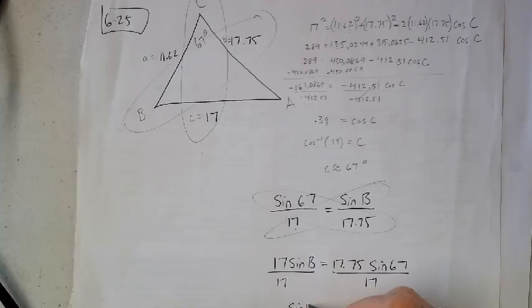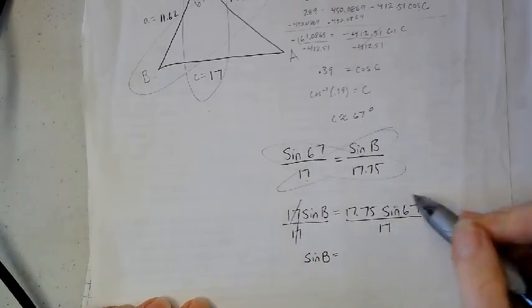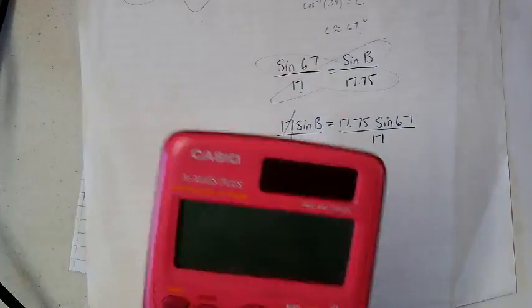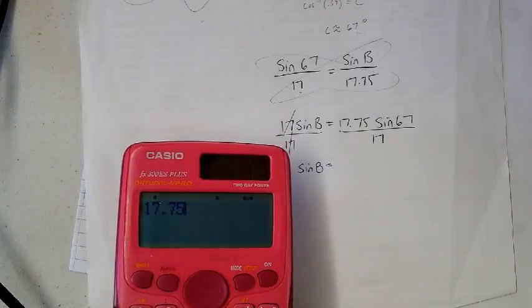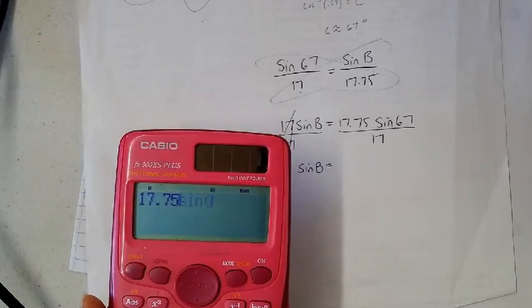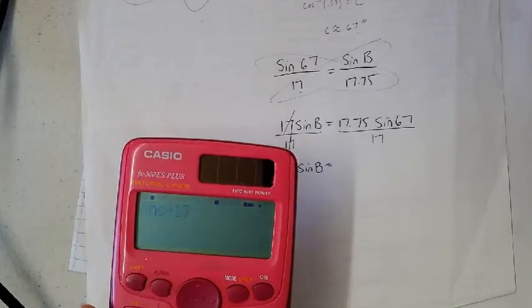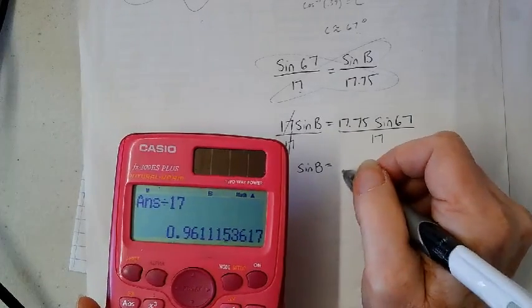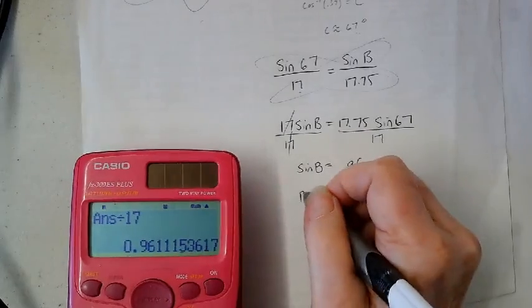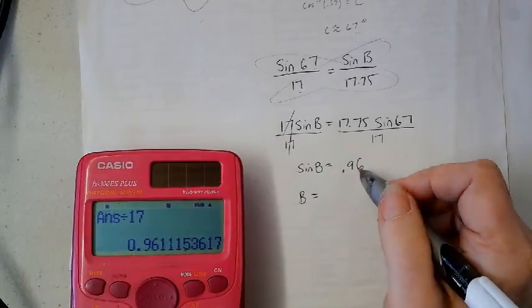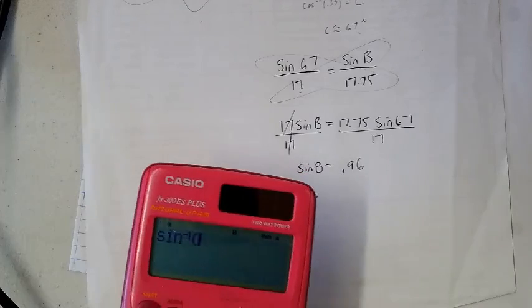17 times sine B equals 17.75 times sine of 67. But I want B by itself. I'm going to have to do an inverse sine on this eventually. I'm going to ask my calculator what all this equals out to. 17.75 sine of 67 divided by 17 equals about 0.96.